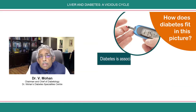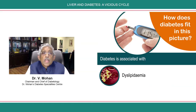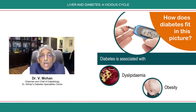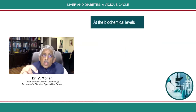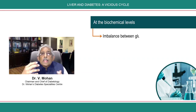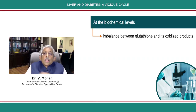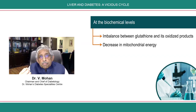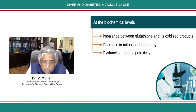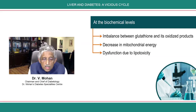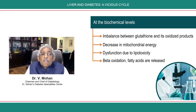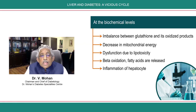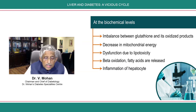How does diabetes fit into all this? Diabetes is associated with dyslipidemia and also with obesity, so the scene is now set for chronic liver disease to come in because of diabetes. At the biochemical level, there is an imbalance between glutathione and its oxidized products, leading to decreased mitochondrial energy, which in turn causes dysfunction due to lipotoxicity, beta oxidation, and release of fatty acids — the hepatocytes get inflamed and the liver is damaged.